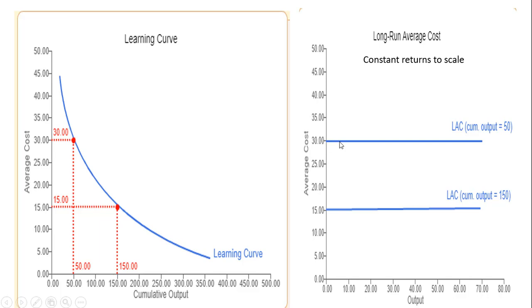So if we go into the year and our cumulative output was 50 units, then our per-unit cost will be $30 going into the year. On the other hand, if we have more experience producing this product, our cumulative output is 150, we can enjoy per-unit cost during the current period of $15 per unit.